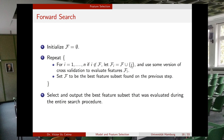If you have four features, in the first step you create four sets, each containing only one feature. Once these initial sets are created, you use cross-validation to evaluate which subset gives the best performance.